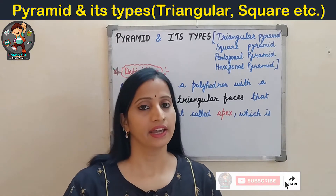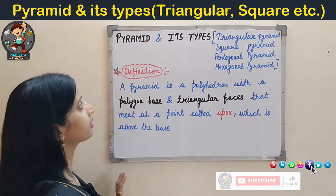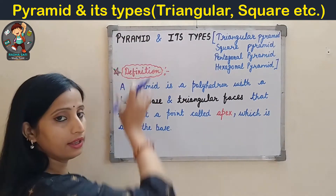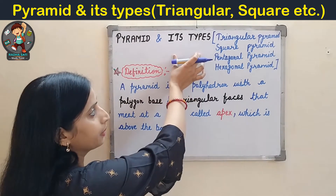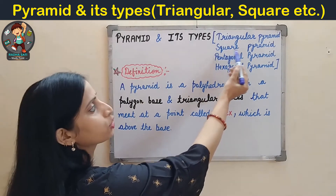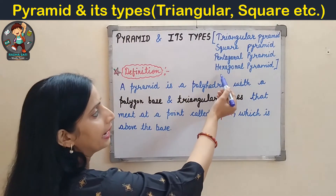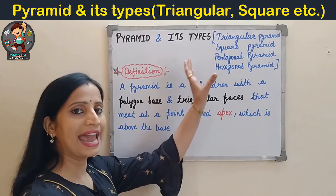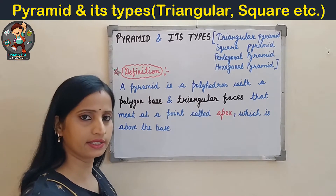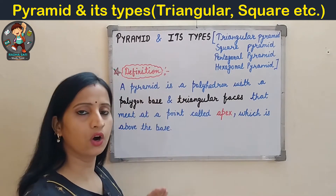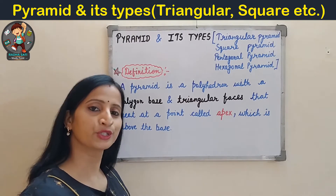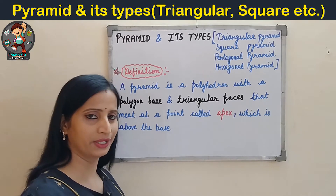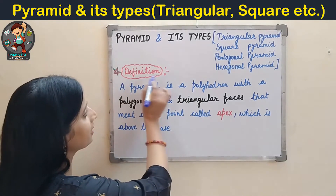Hello friends, welcome back. In today's video I am going to discuss about pyramids and their types. First I will discuss what is a pyramid, and then I will discuss about types like triangular pyramid, square pyramid, pentagonal pyramid, hexagonal pyramid and so on. I will also discuss their faces, edges and vertices. This video I am making on the demand of one of my subscribers. So let's start with the definition.